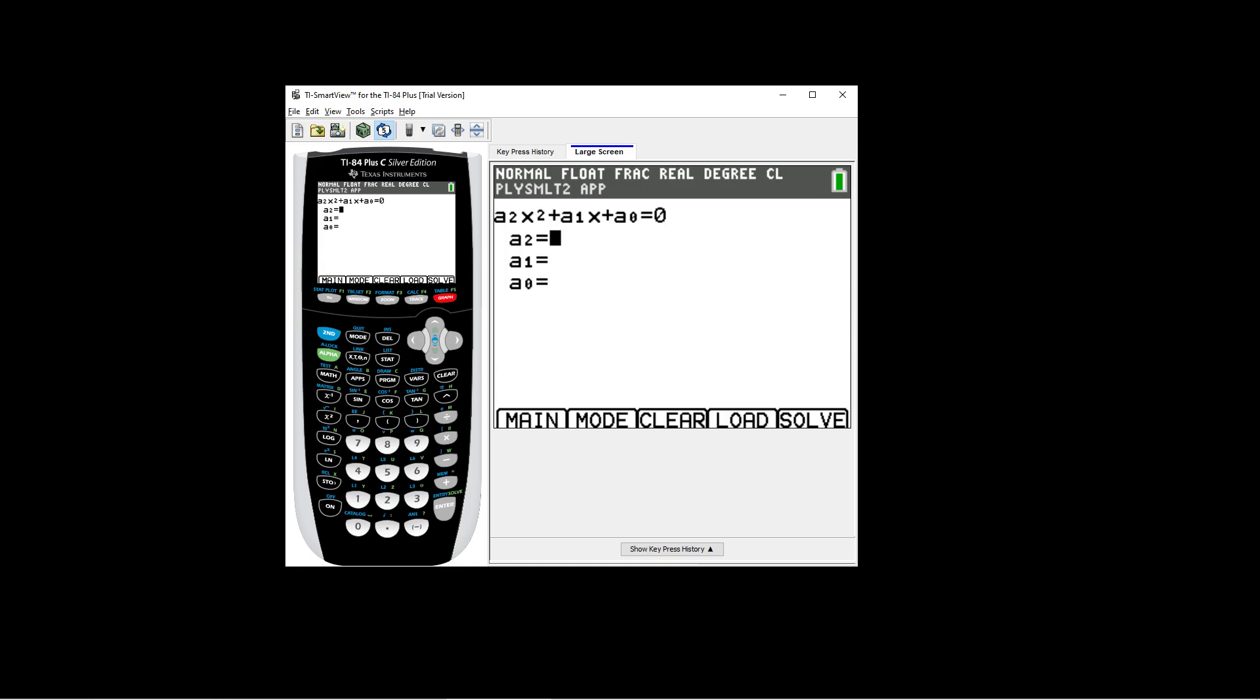For this program, the calculator doesn't use the notion of capital A, B, and C for the terms. Instead, it uses A2, A1, and A0. But it's the same thing. For A2, we're going to use our value of capital A, which is negative 21. And then press enter.